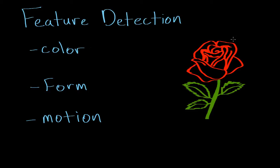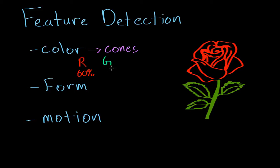Let's go into each one of these different features. Our ability to sense color actually arises from the presence of cones within our retina. Cones are extremely important because they're sensitive to various types of light. We have three major types of cones: red cones, which make up 60% of the cones in your eye; green cones, which make up 30%; and blue cones, which make up about 10%.